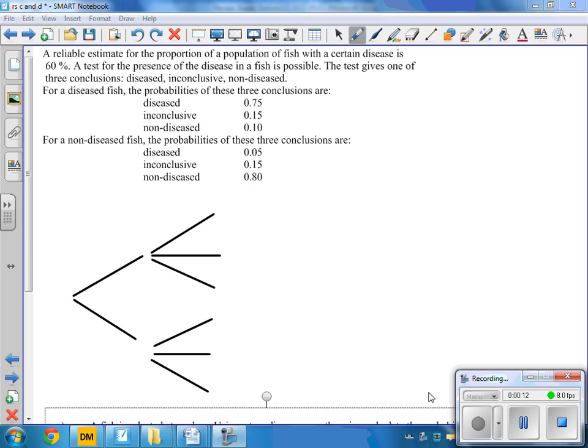And the first thing is we're splitting these probabilities into either they're diseased or they're not diseased. So we need to actually have here, this is a diseased fish and this is a fish that's OK, diseased or fine. And the chance of it being diseased is 0.6. So the chance of it being fine must be 0.4.